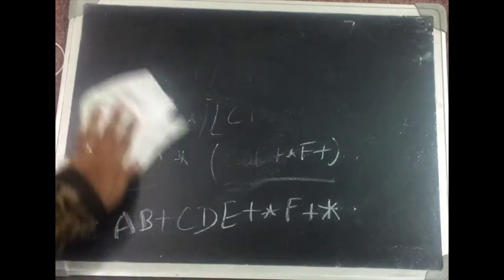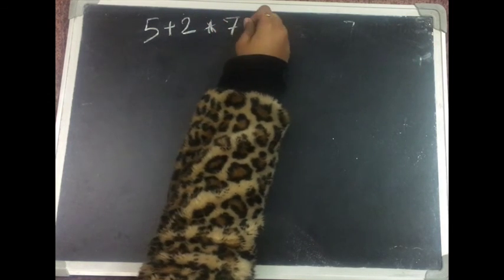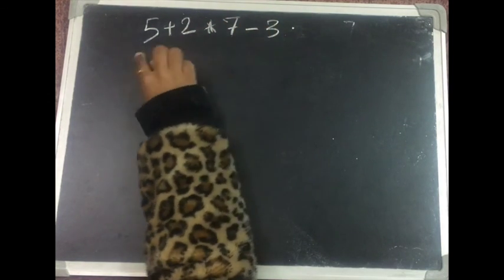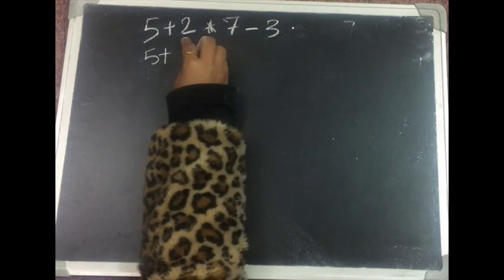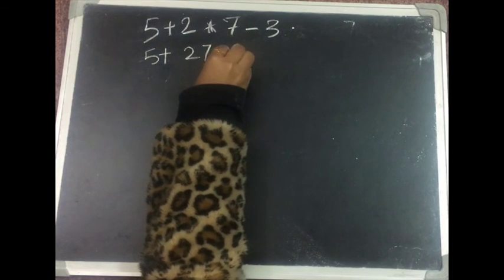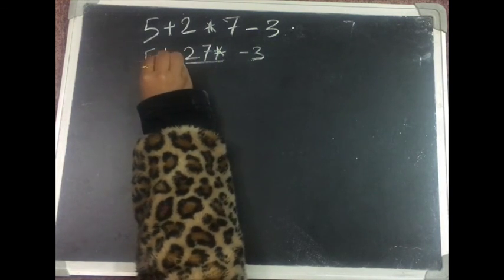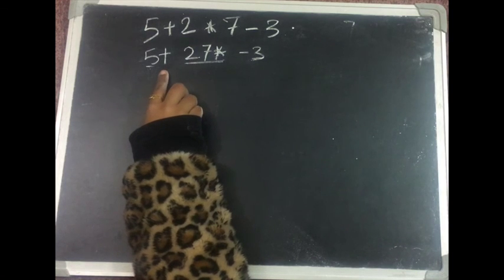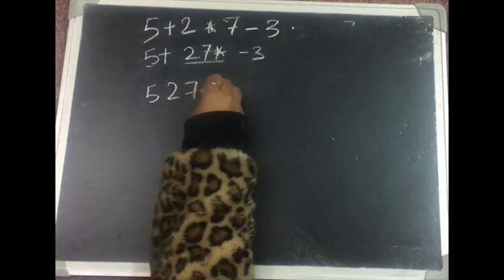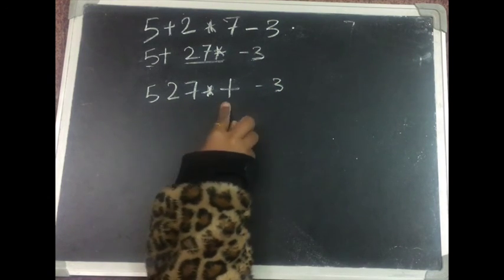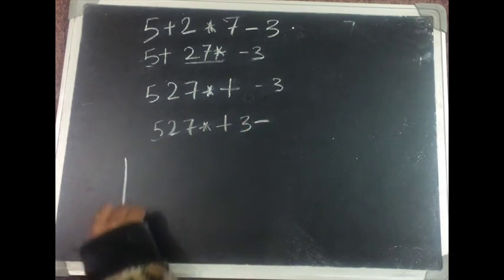So that is how you convert an infix to a postfix. Now suppose we have the expression 5 plus 2 into 7 minus 3. Converting to postfix: multiplication has higher precedence, so we write 2 7 star. Then, treating plus and minus with equal precedence and taking plus first: 5 2 7 star plus. Then minus 3 remains, giving the final postfix: 5 2 7 star plus 3 minus.